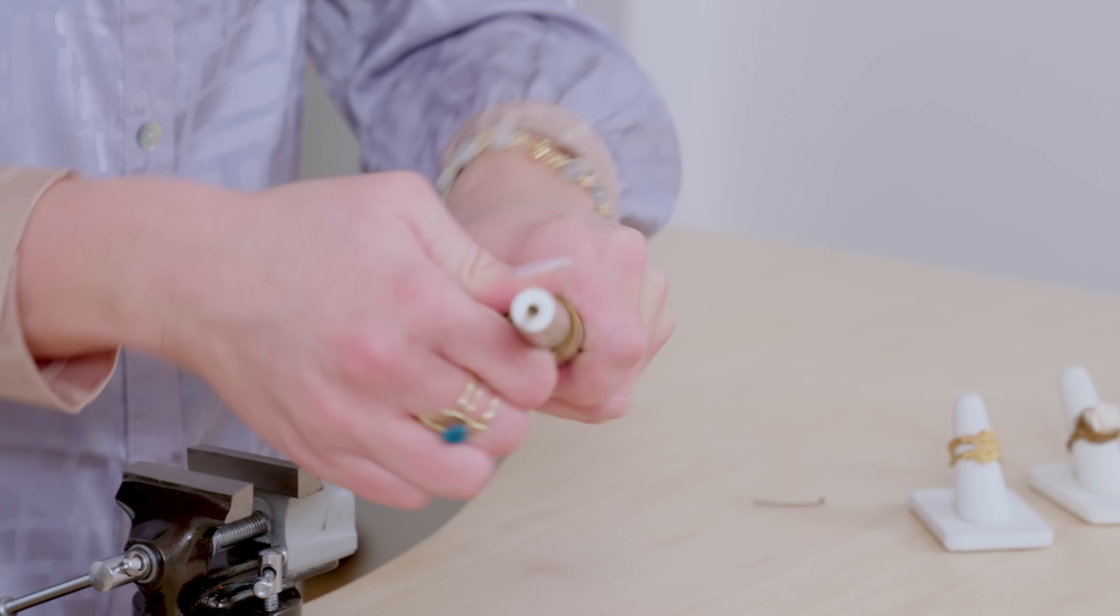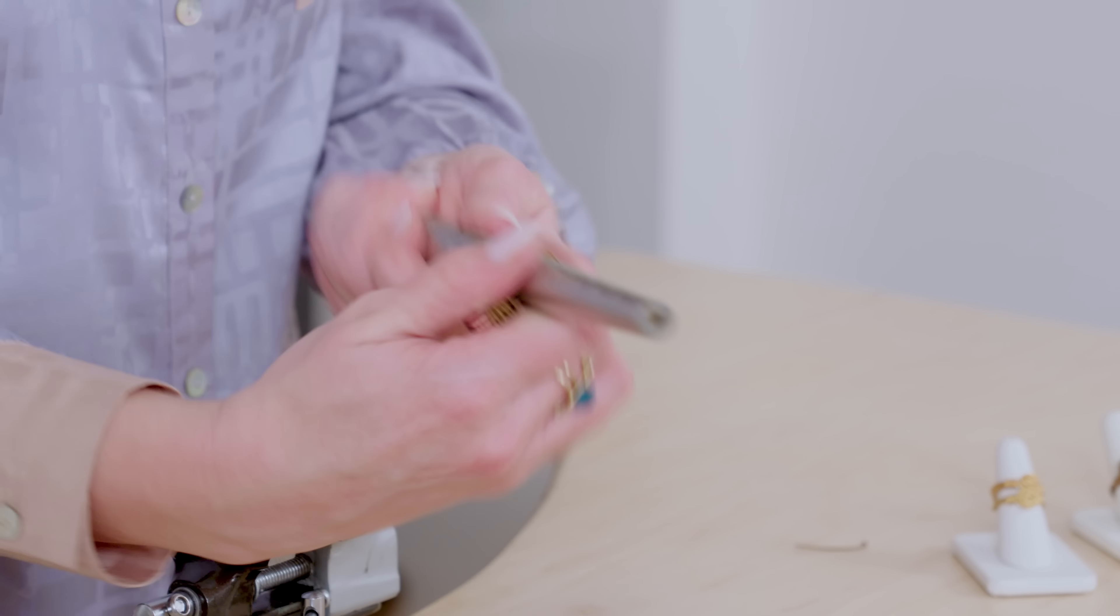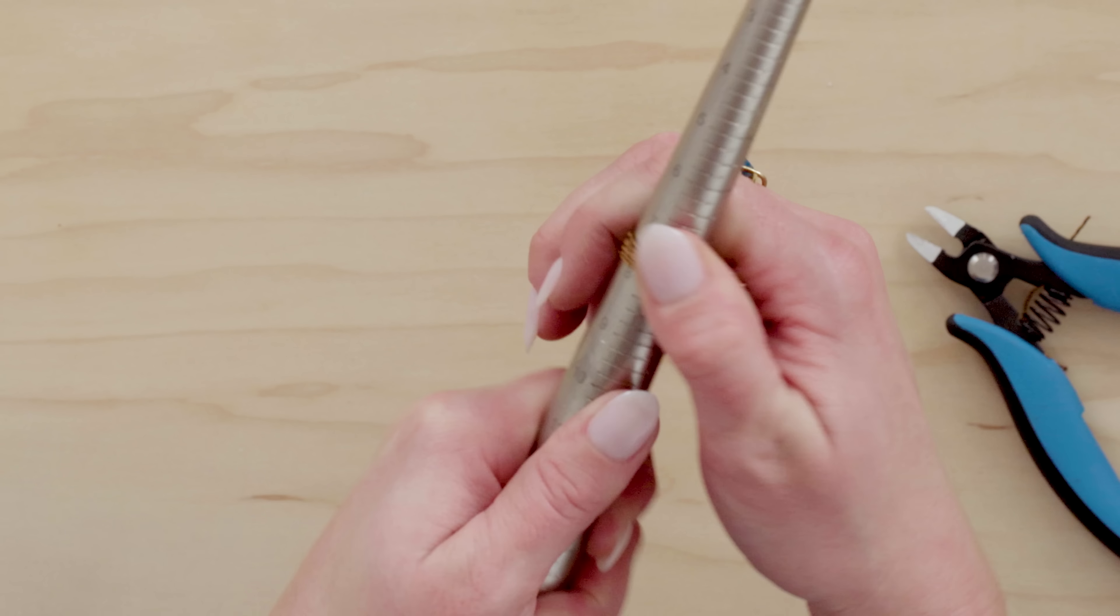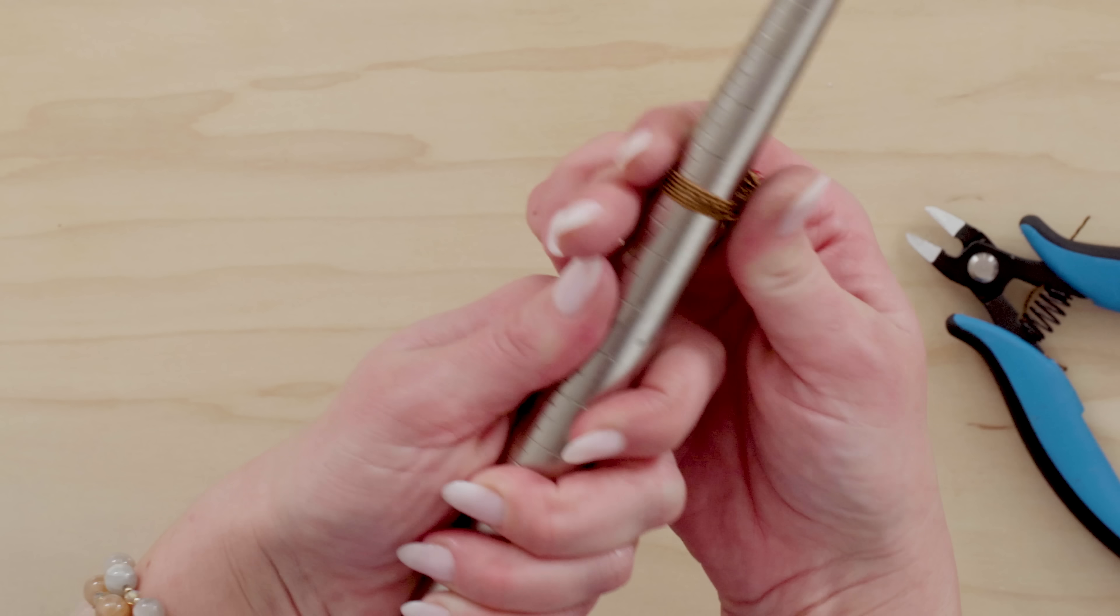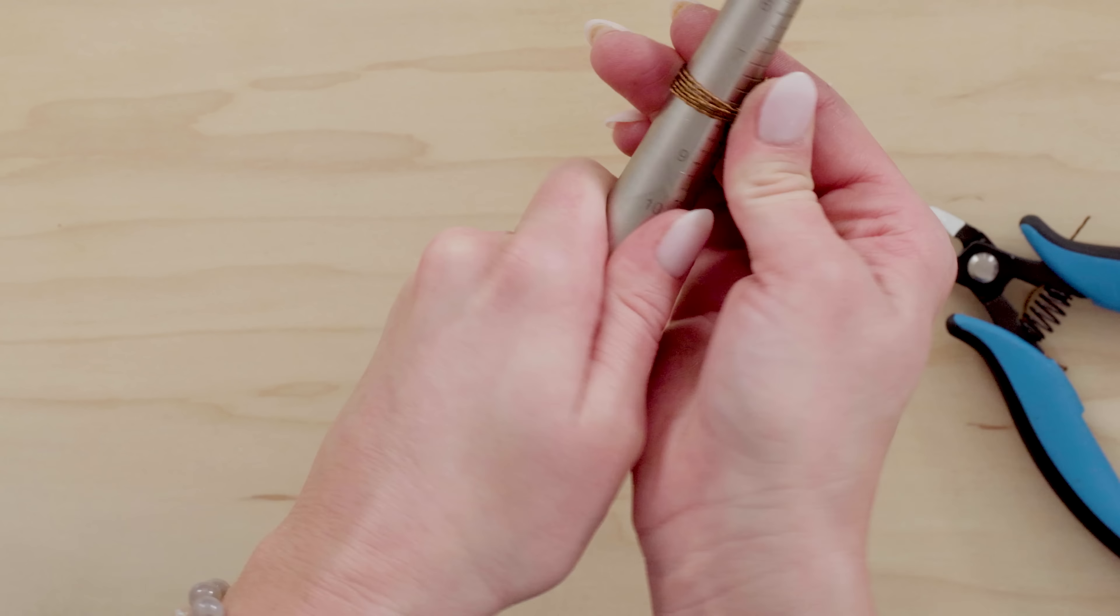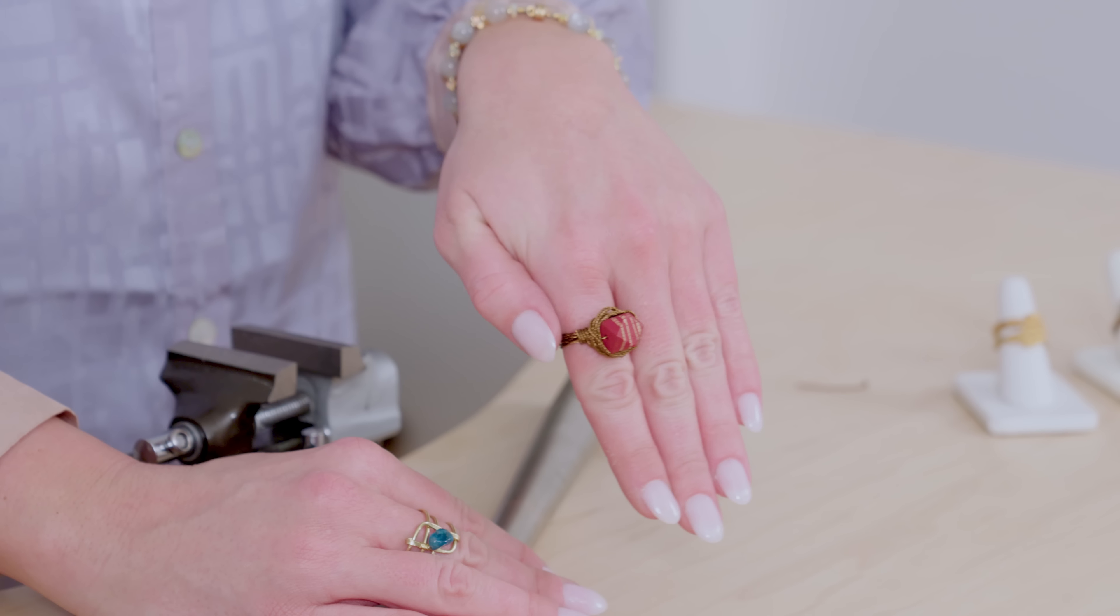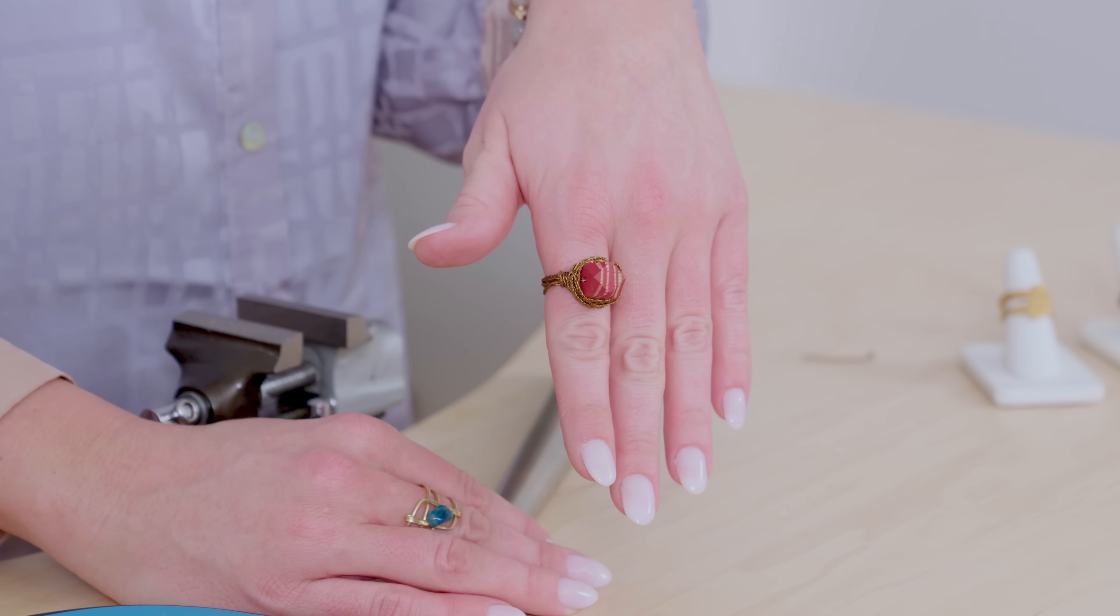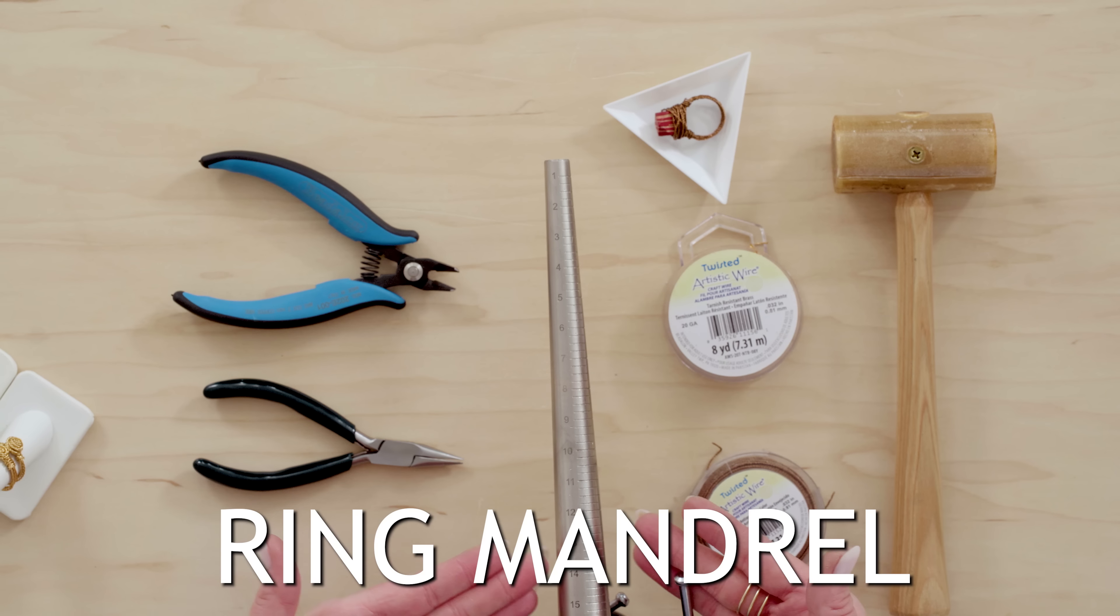And another tip is if you want you can take your mandrel off your mount and actually use it in your hand to kind of twist at the same time. Makes it a little bit easier to slide it down. So now see I did it I'm right on the eight. All right so there you have it that's how you make a beautiful wire wrapped ring using the twisted wire. So easy and fun.